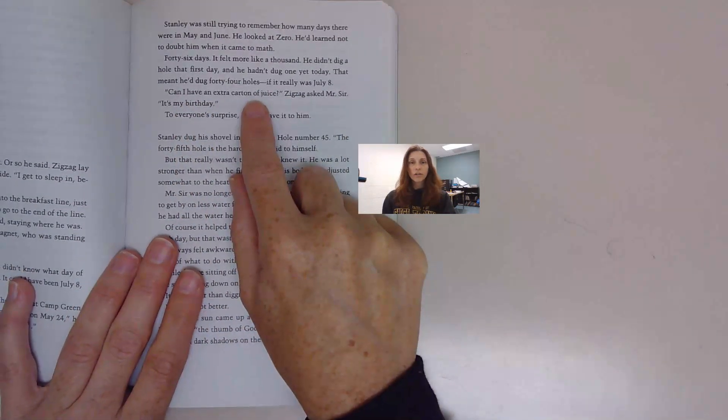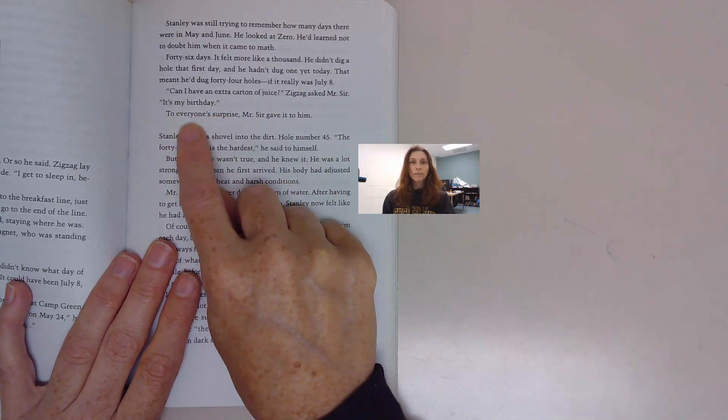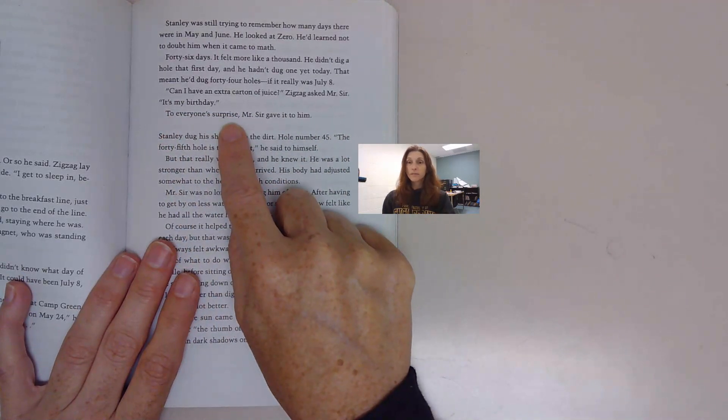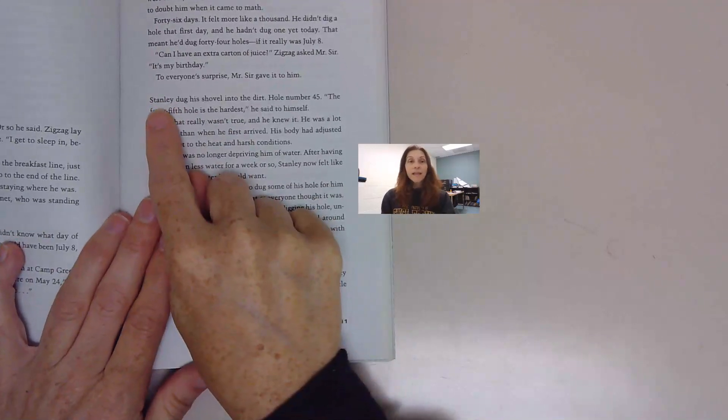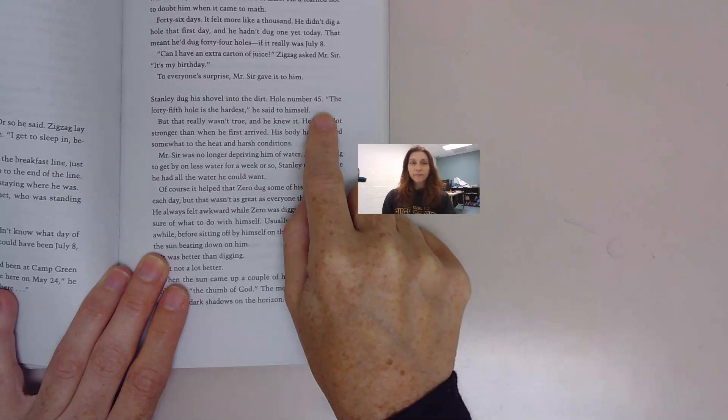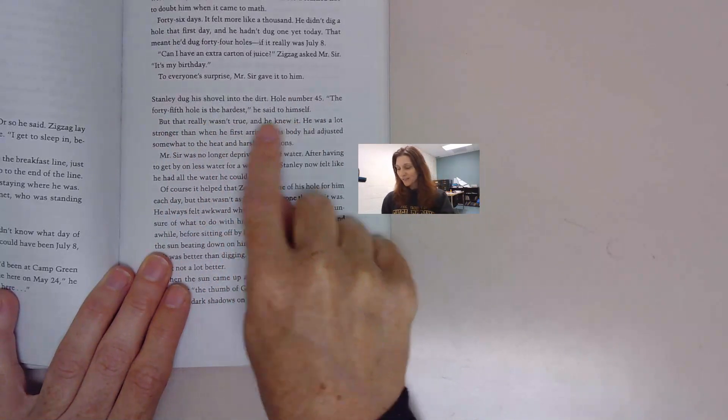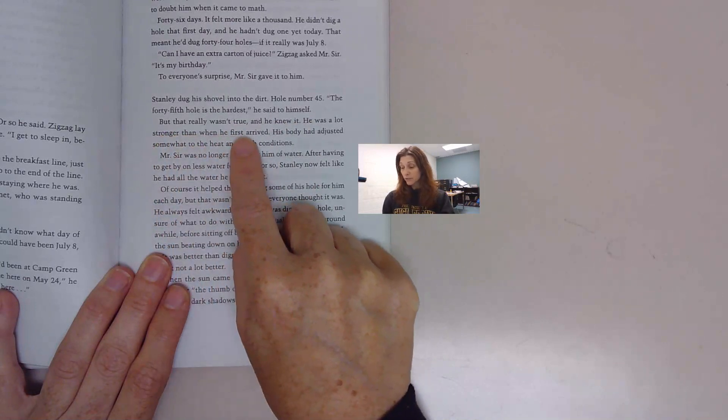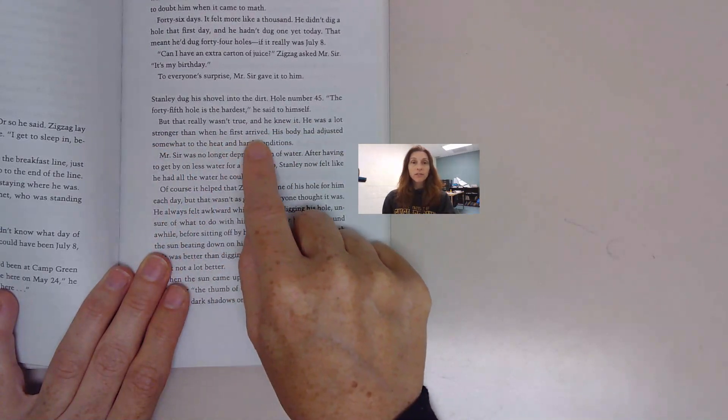He didn't dig a hole that first day, and he hadn't dug one yet today. That meant he dug 44 holes, if it really was July 8th. Can I have an extra carton of juice? Zig Zag asked Mr. Sir. It's my birthday. To everyone's surprise, Mr. Sir gave it to him. Stanley dug his shovel into the dirt. Hole number 45. The 45th hole is the hardest, he said to himself. But that really wasn't true, and he knew it.